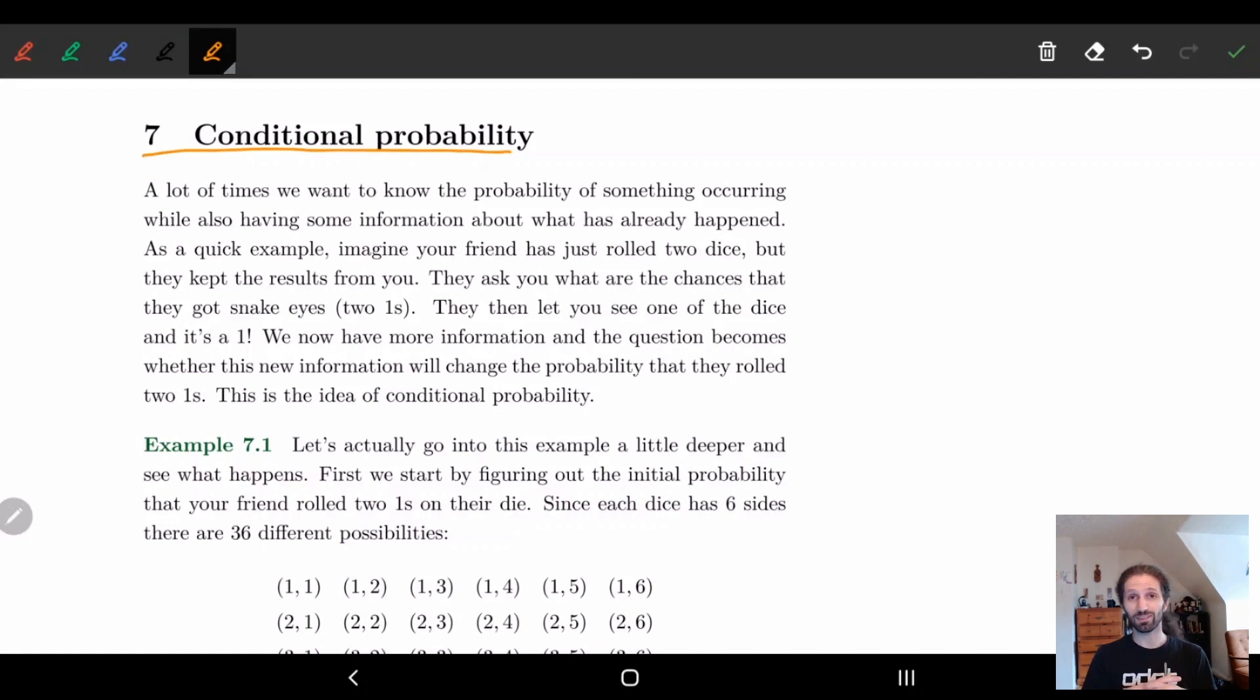But then they go okay fine, I'm gonna let you see one of the dice. And they show you the number one. So you see that one of them is a one. And so now the question becomes, if you know that one of them is a one does that change your probability? Do you have now more information about the problem? What's the new information and how does this help?